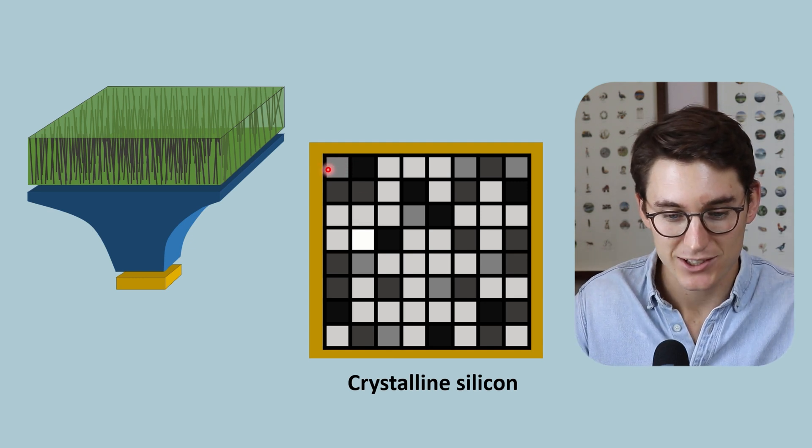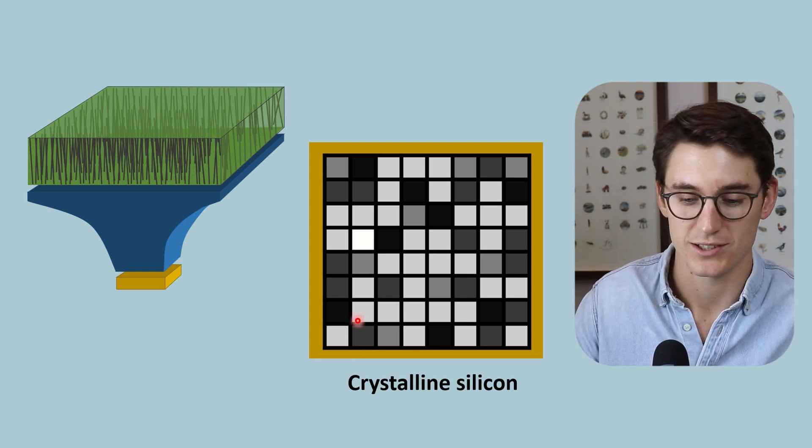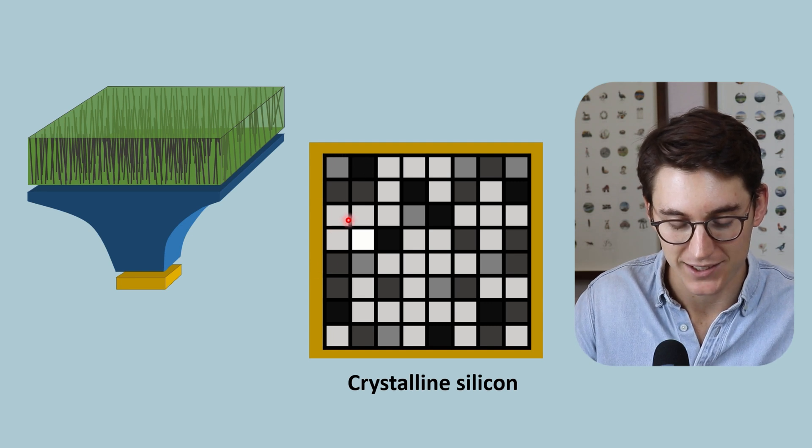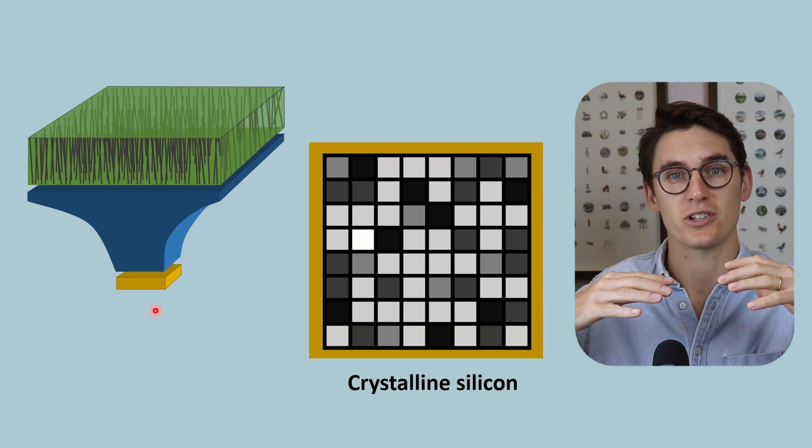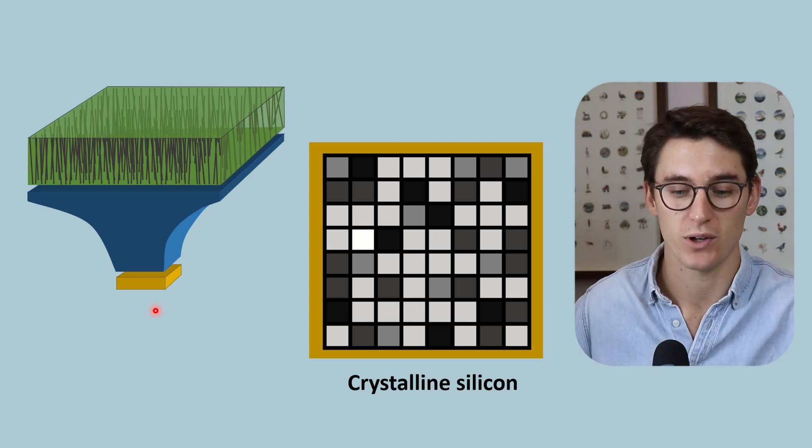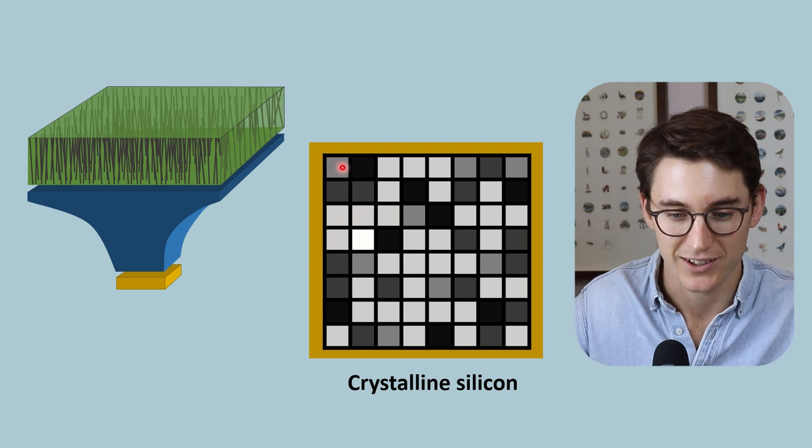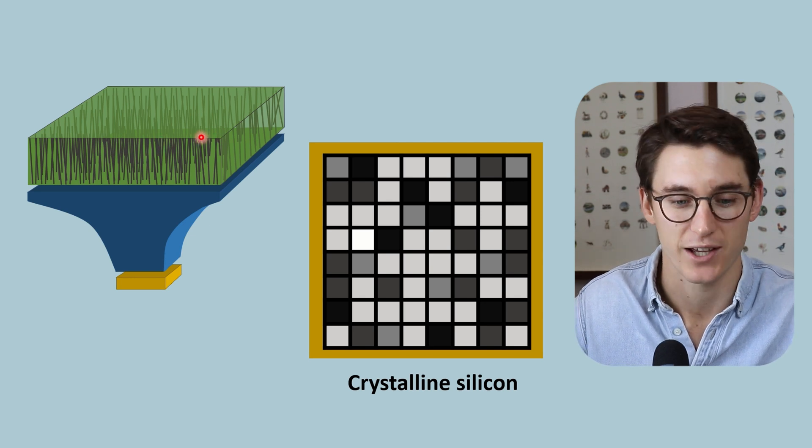Now the dexels here are separated by voltage gates here that have been etched onto this crystalline silicon. Now the voltage that is run through these black lines here that separate each of these dexels prevent the electrons that have been released on the surface to spread into other dexels. They keep them within this specific spot.